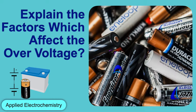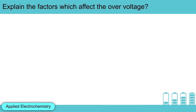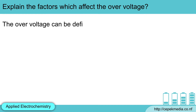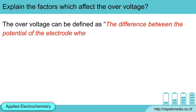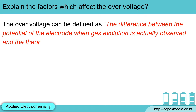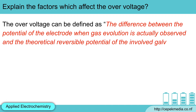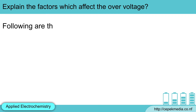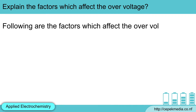Explain the factors which affect overvoltage. Overvoltage can be defined as the difference between the potential of the electrode when gas evolution is actually observed and the theoretical reversible potential of the involved galvanic cell. Following are the factors which affect the overvoltage.